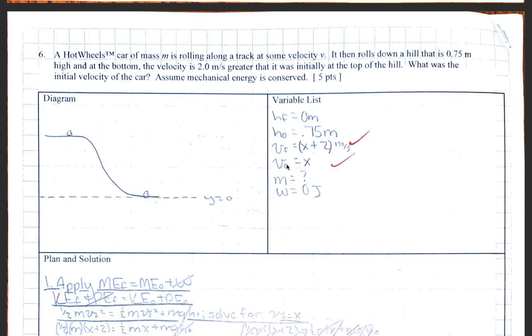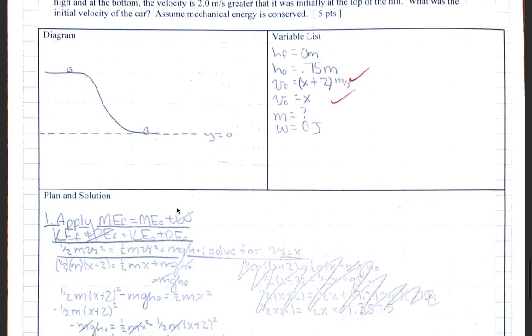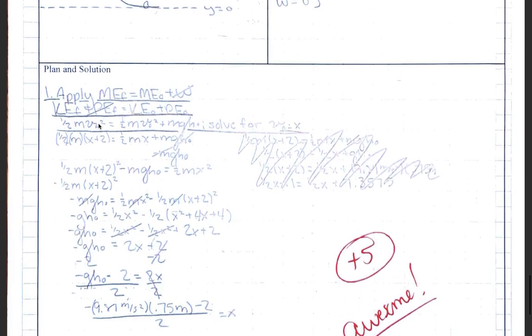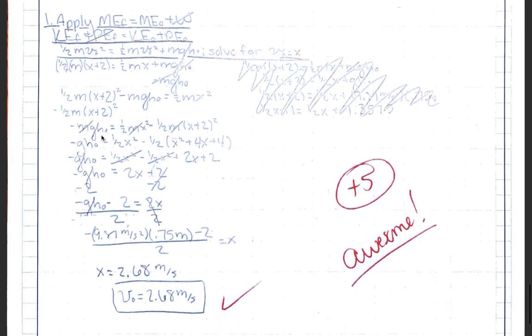This person chose to call the initial velocity x because they don't know it, and the velocity at the bottom of the hill is x plus 2 because when you get to the bottom of the hill, you're going 2 meters per second faster. So they applied the work energy theorem to develop an equation, and then instead of v initial, they put in x squared, and instead of v final, they put in x plus 2 squared.